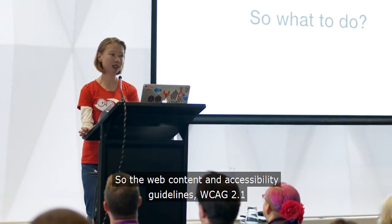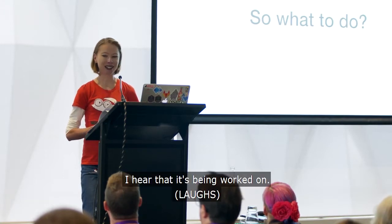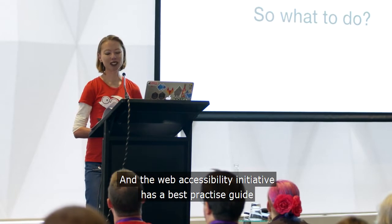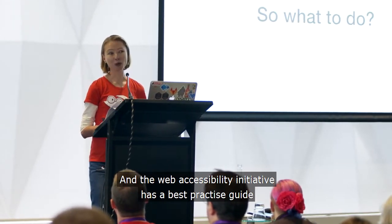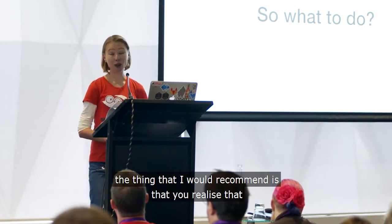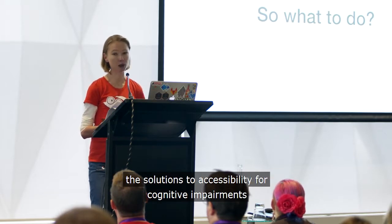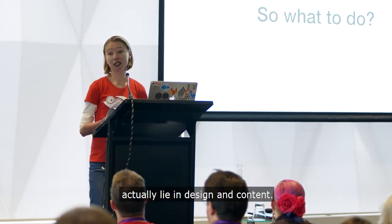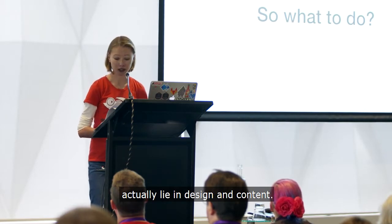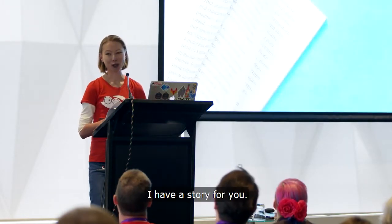The Web Content Accessibility Guidelines WCAG 2.1 has a few guidelines to address cognitive impairment, but not many — I hear that it's being worked on. And the Web Accessibility Initiative has a best practice guide to cognitive impairment as well. But the thing that I would recommend is that you realise that the solutions to accessibility for cognitive impairments actually lie in design and content. To elaborate, I have a story for you.